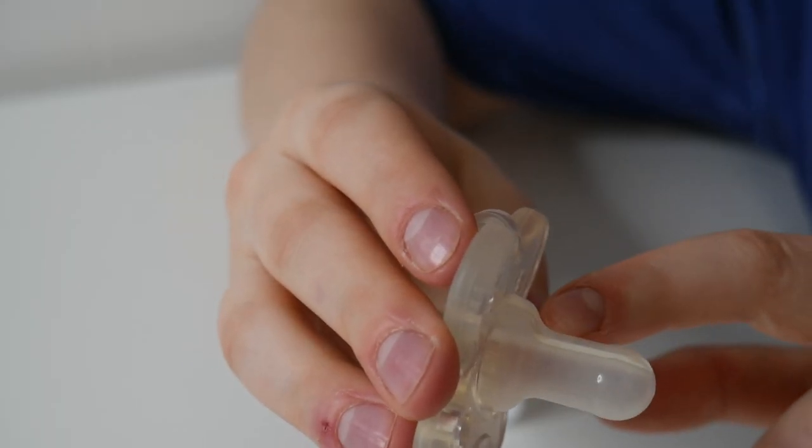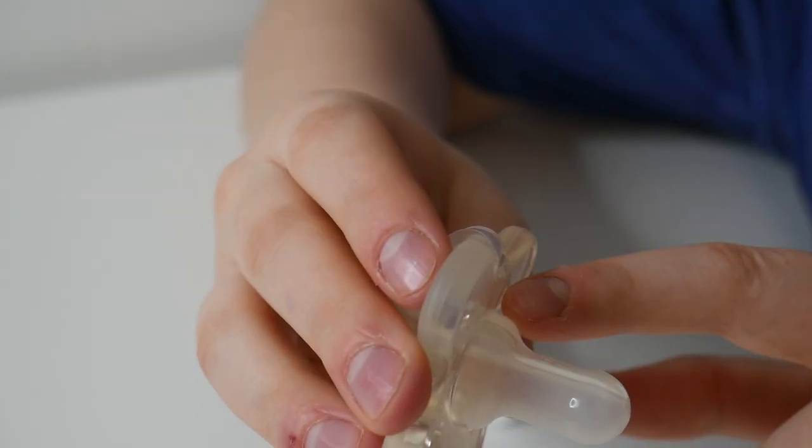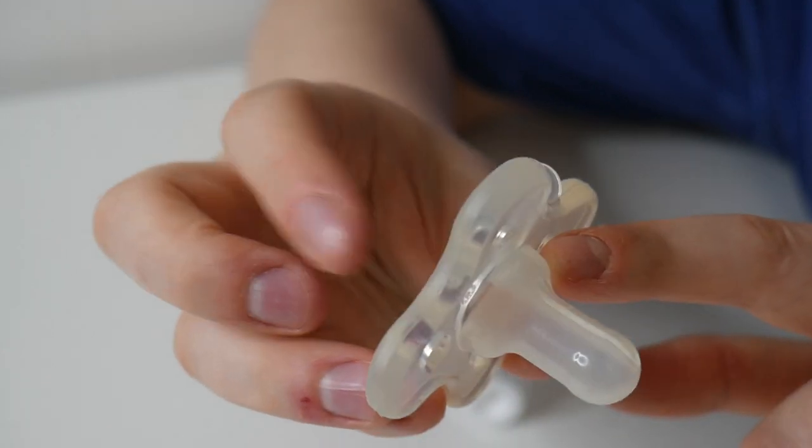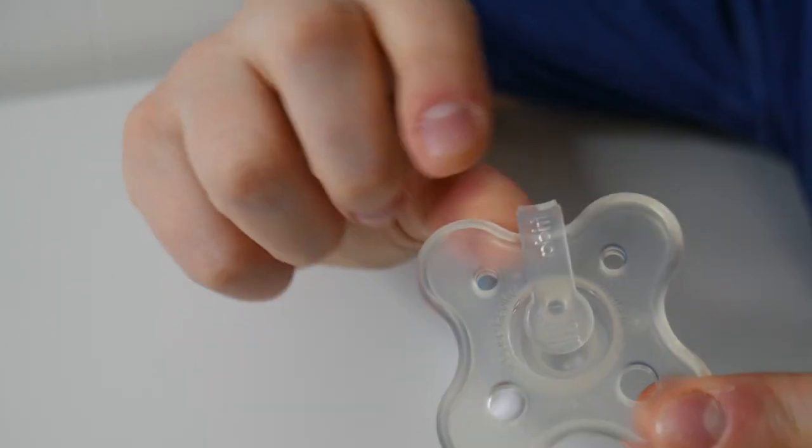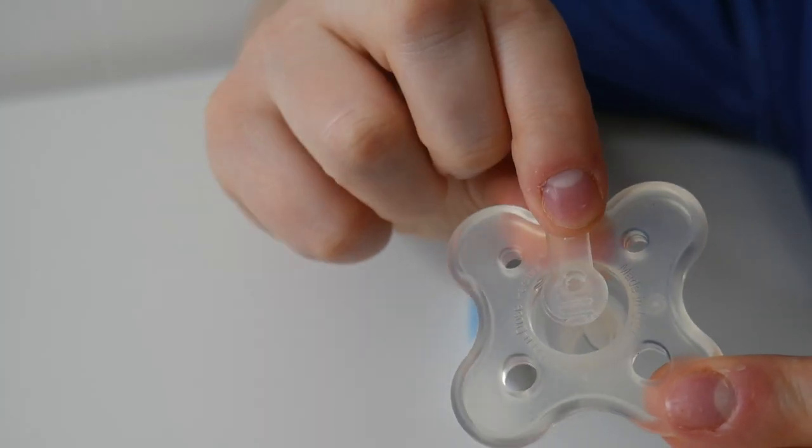And then right here there is the pacifier medicine channel, which is where the medicine will flow from the syringe to your baby's mouth. It also has this little pacifier plug right here, so no medicine spills out.